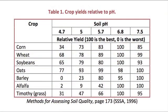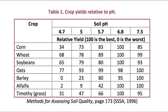The first table lists some of the common crops and what level of pH they like and which is best for productivity. For example, corn — a pH of 6.8 would be ideal.